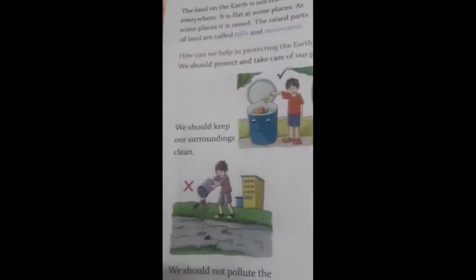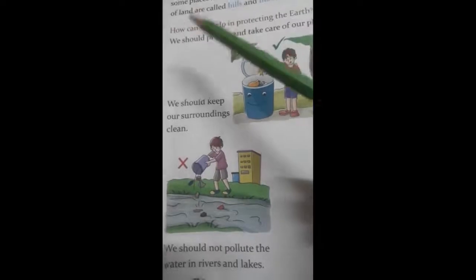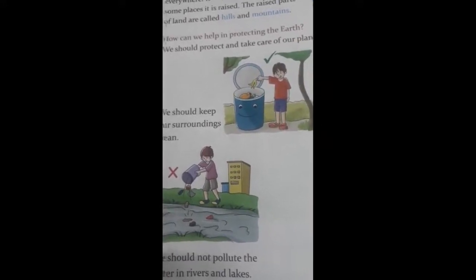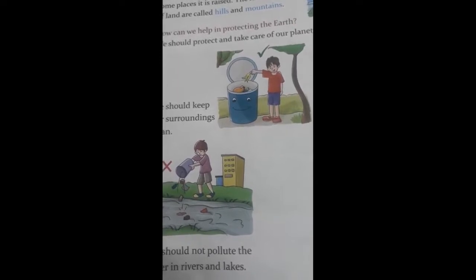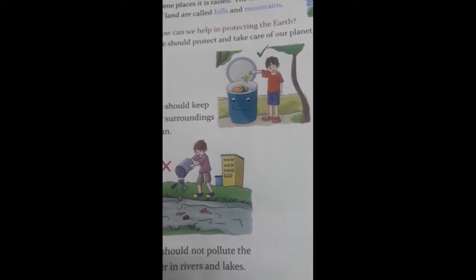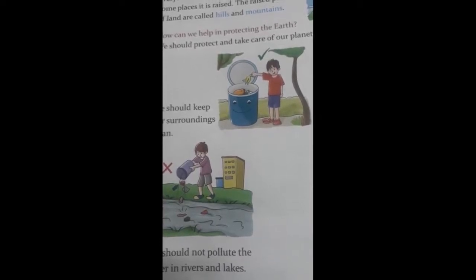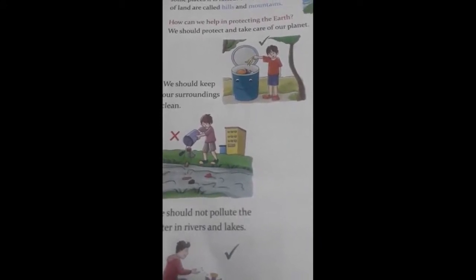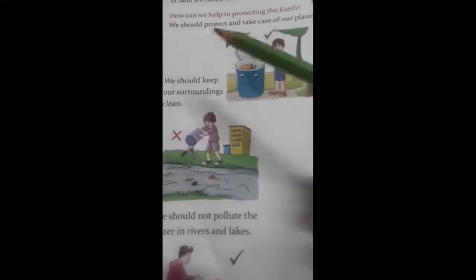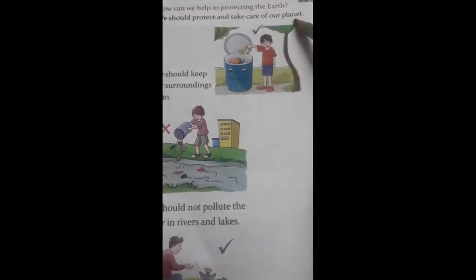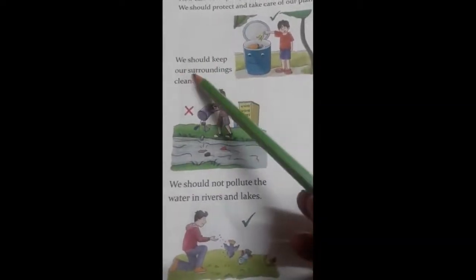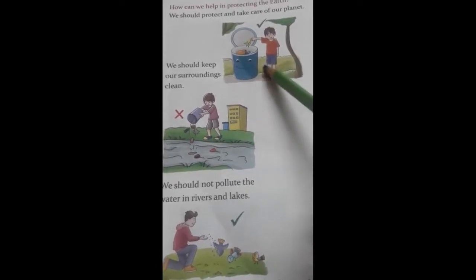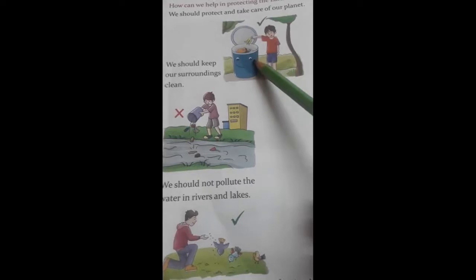Now we are going to start from here. How can we help in protecting the Earth? As you all know, life is possible only on Earth. So children, it is our duty to protect Earth. How we can protect our environment, our Earth? Let's see. We should protect and take care of our planet. We should keep our surroundings clean. You should not throw garbage here and there. You should throw garbage in the dustbin only.